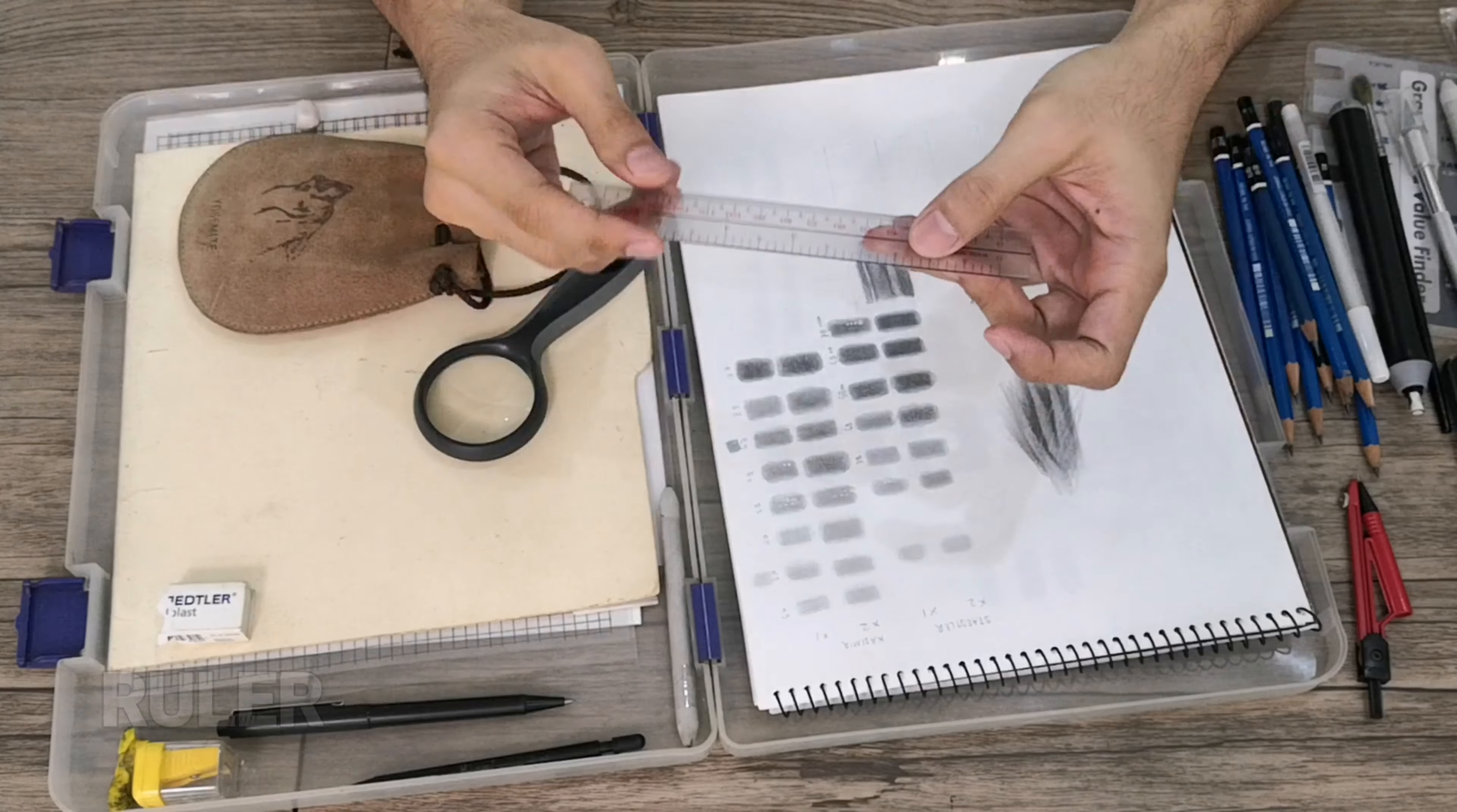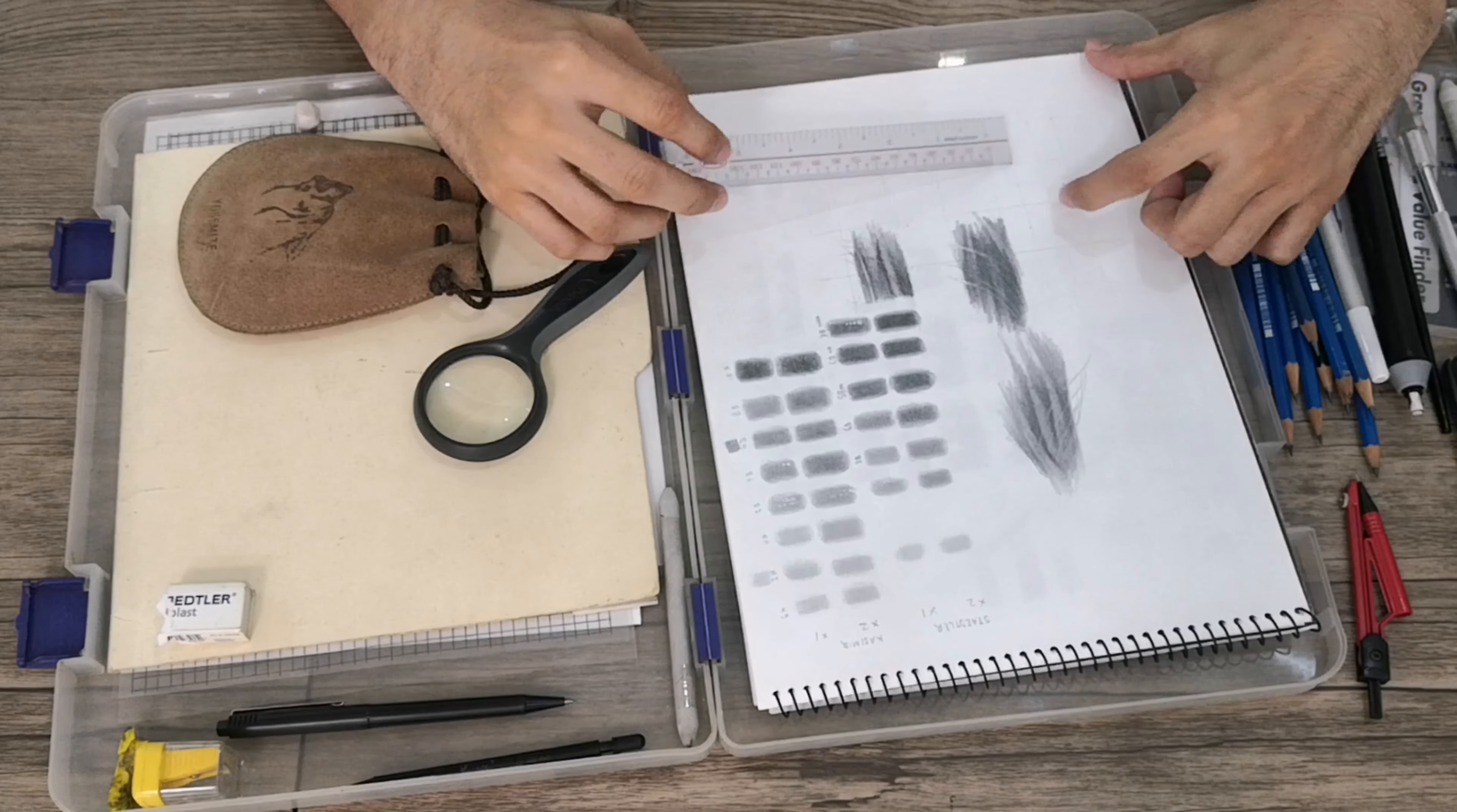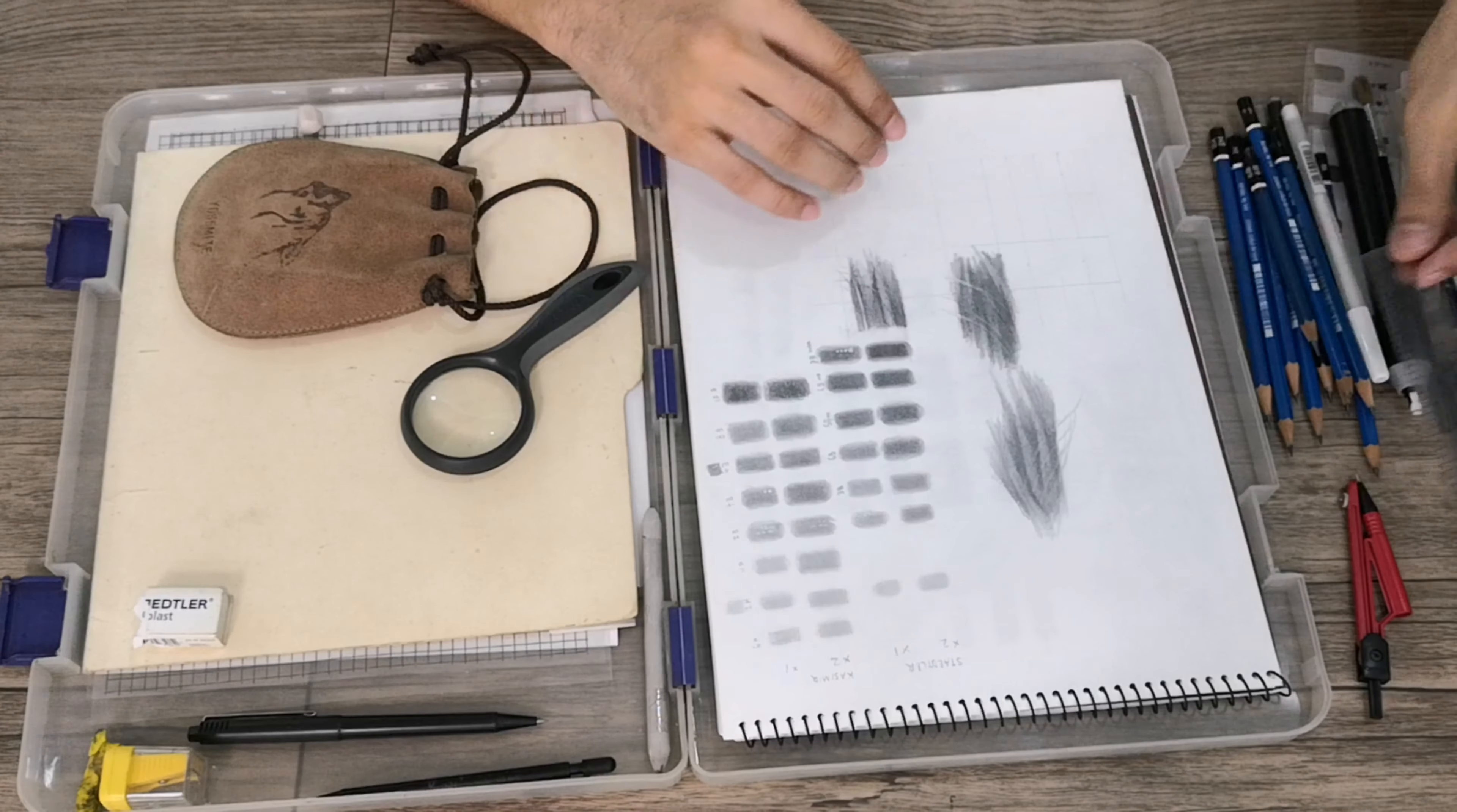I also have here my rulers. Basically the use of the ruler is for making the grids. We basically make grids in our drawing so that it will be an exact proportion. Later I will also explain this in a separate video.